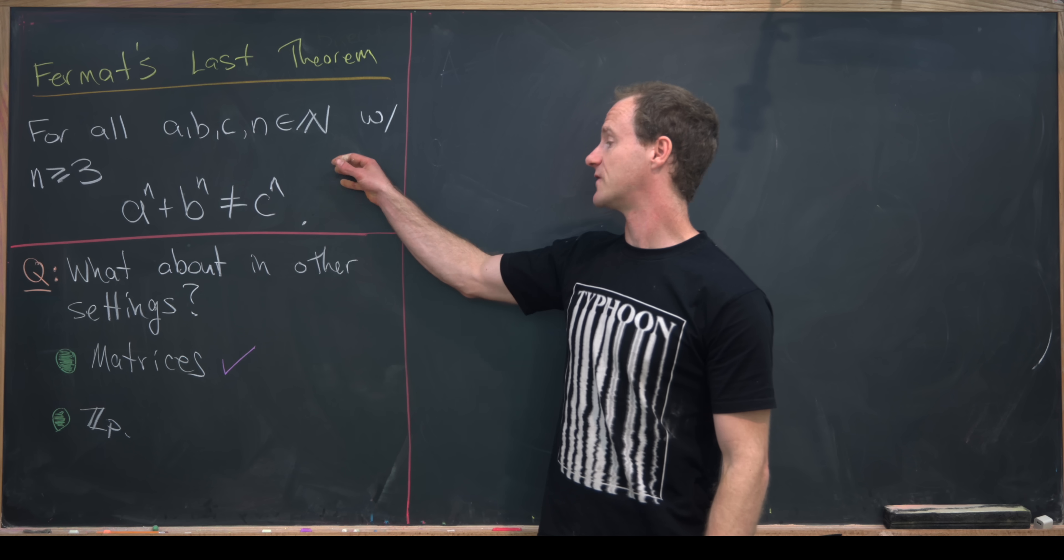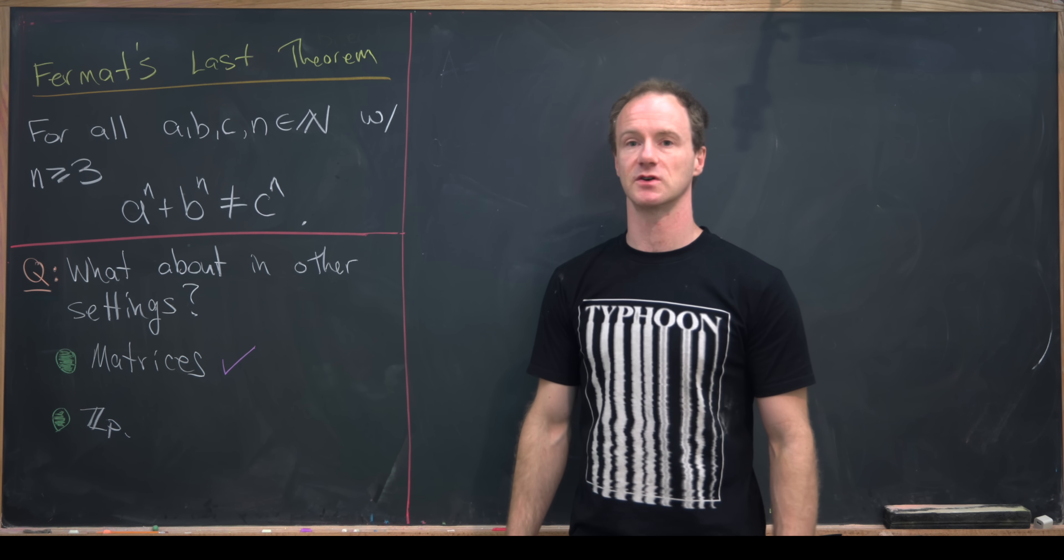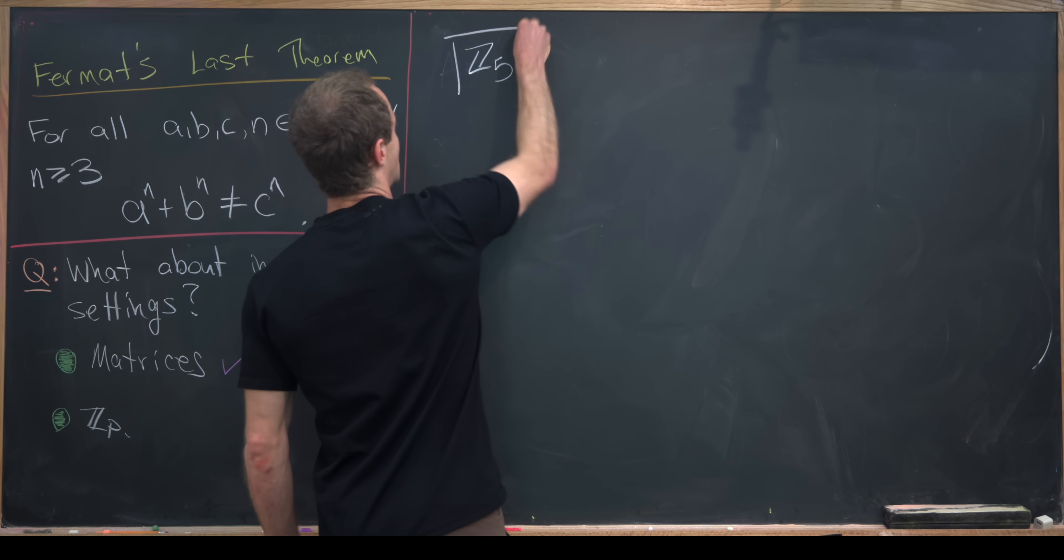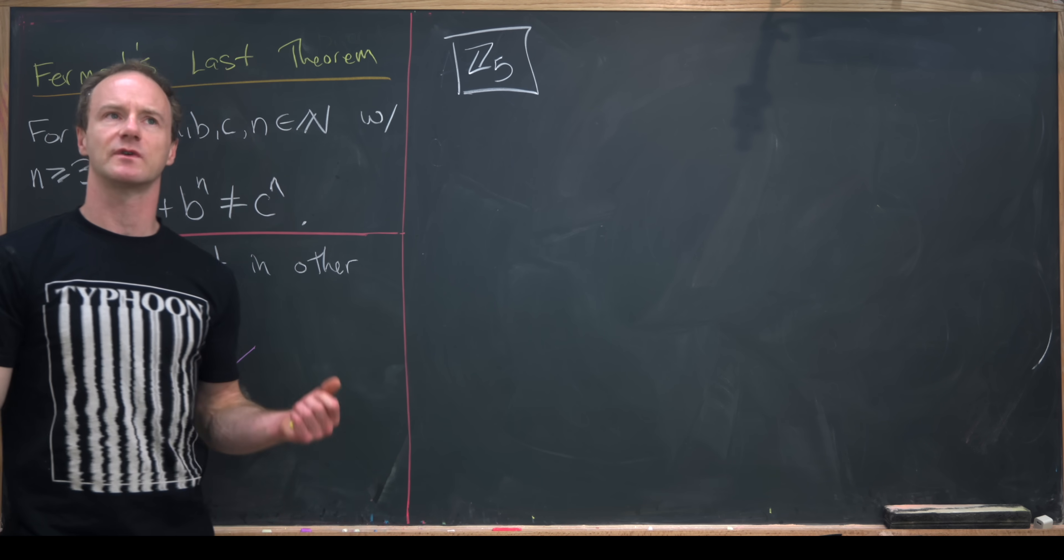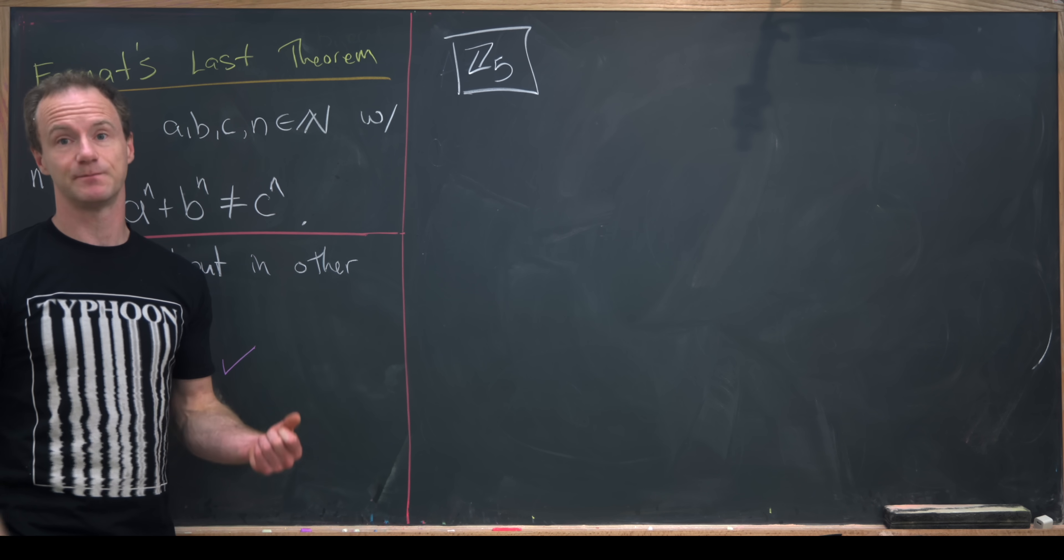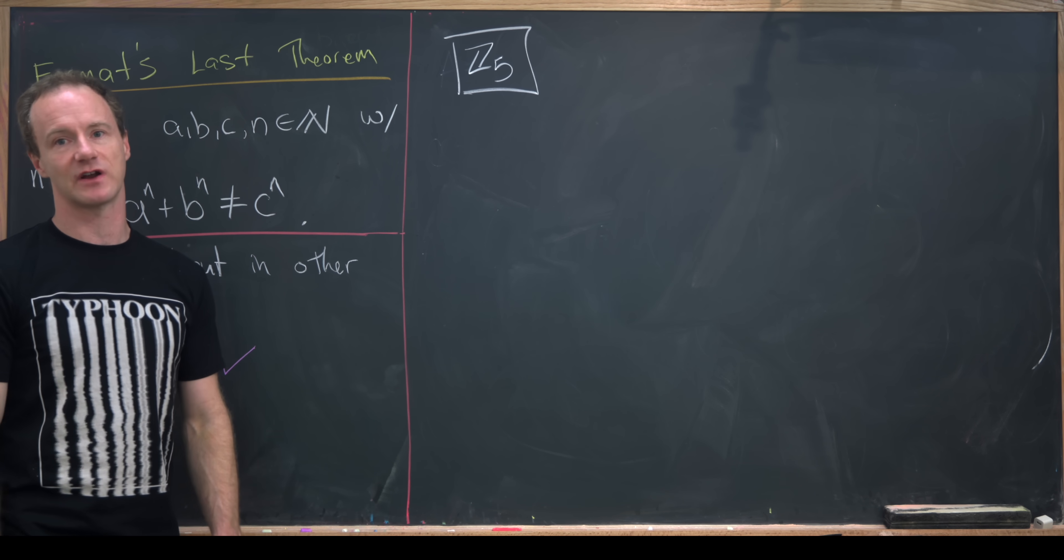Now we're going to show that this kind of theorem also does not hold over ZP. In this case, we'll take Z5. So that's the integers modulo 5. And so that's a ring. In other words, it has a multiplication and an addition. It's just you reduce mod 5 after every step.